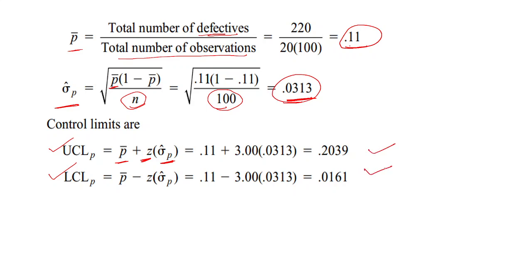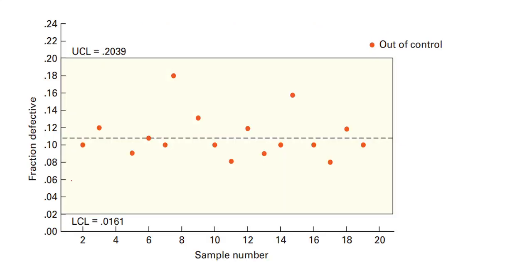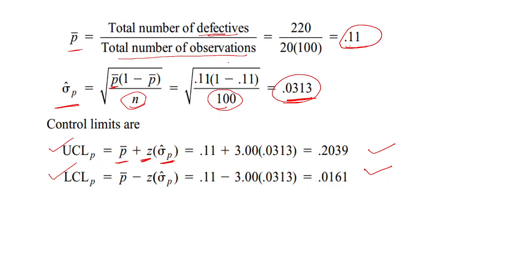These are the control limits of the p-chart. This is the lower control limit 0.0161. This is 0.2039, which we have already calculated.